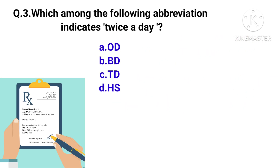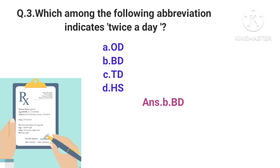Which among the following abbreviations stands for EEG? The options are OG, BG, TG, or HS. The right answer is option B — EEG (electroencephalogram).